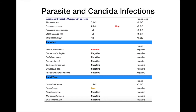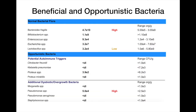Parasites and Candida can also be detected — so blastocystis, Entamoeba histolytica, and Candida can all be picked up on the GI map test. As well as if there's an overgrowth of what's called dysbiotic bacteria. These are normal bacteria that are supposed to be in your digestive tract, but they should be at very low levels, and when they start to overgrow they can cause a wide range of symptoms. Low levels of lactobacillus can also cause health issues, and if you've got too much of certain bacteria, that's also known as dysbiosis. You need your beneficial bacteria and other bacteria in just the right balance.